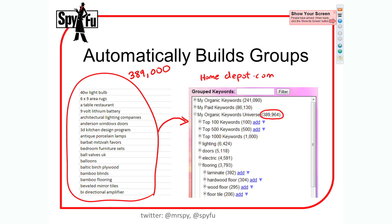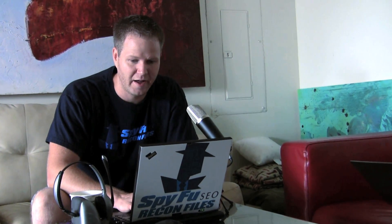That is the tedium that exists in search marketing and keyword marketing pay-per-click today. What Keyword Groupie does is it lets you put in the domain HomeDept.com and not just look at their organic keywords, but also look at their organic keyword universe, their paid keywords, or their paid keyword universe. The paid and organic keyword universe means not just their keywords — not just the ones we've seen them advertise on or rank on organically in Google — but all of their competitors too. It really gives you a very broad picture, but then we break it down.